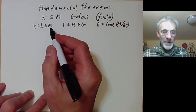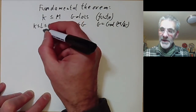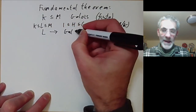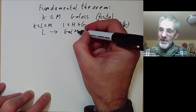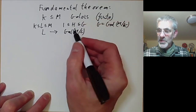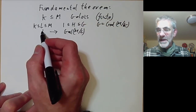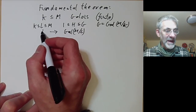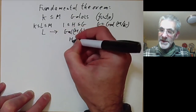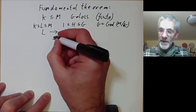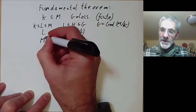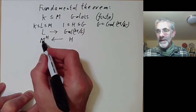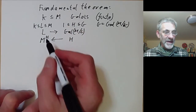This correspondence is given as follows. A subfield L corresponds to the Galois group of M over L — that's automorphisms of M fixing L, and not automorphisms of L. On the other hand, a subgroup H corresponds to the fixed field, that's the set of elements of M fixed by H.